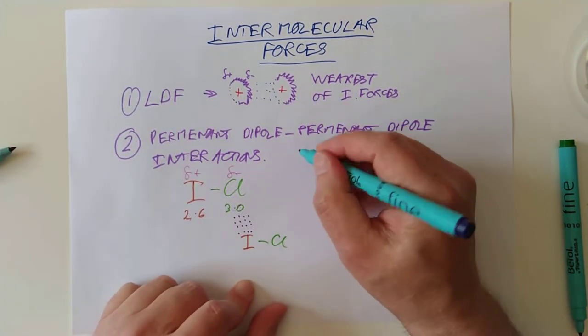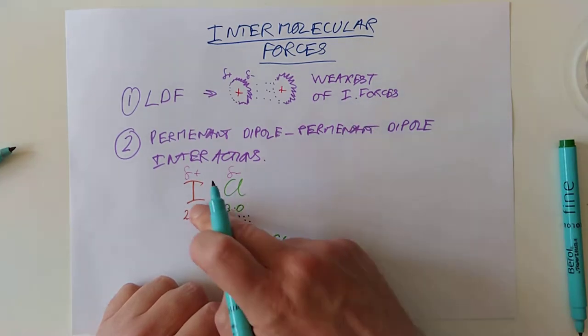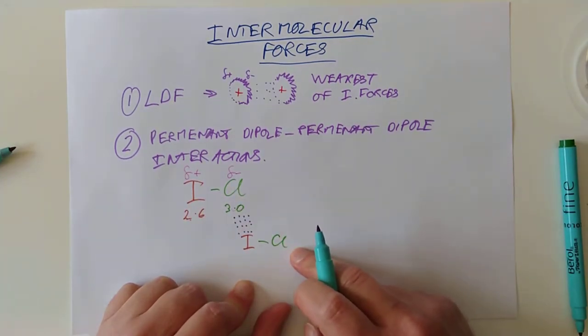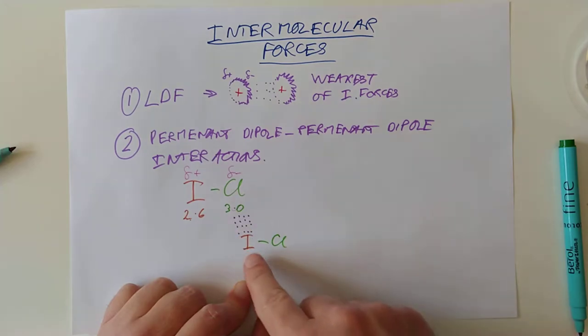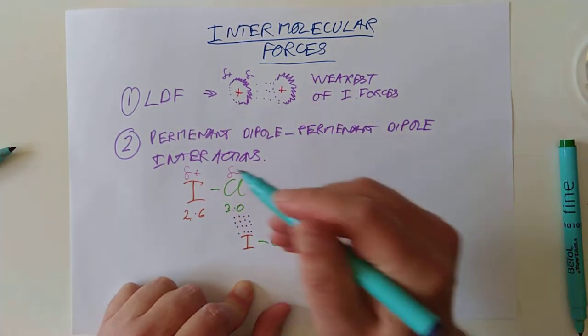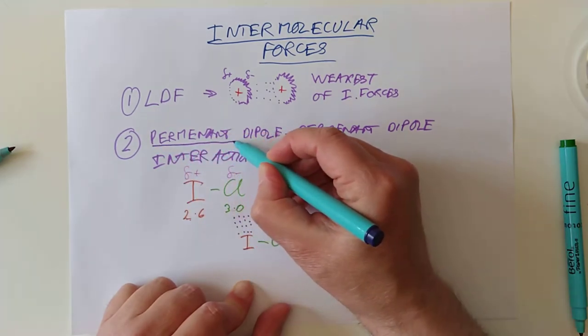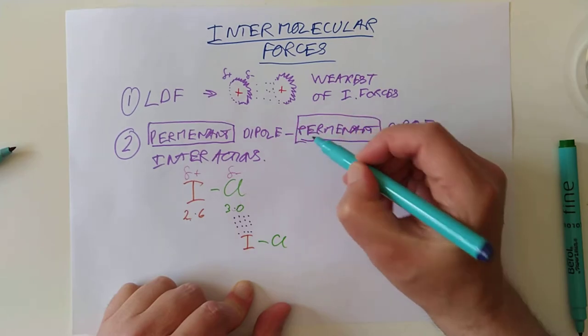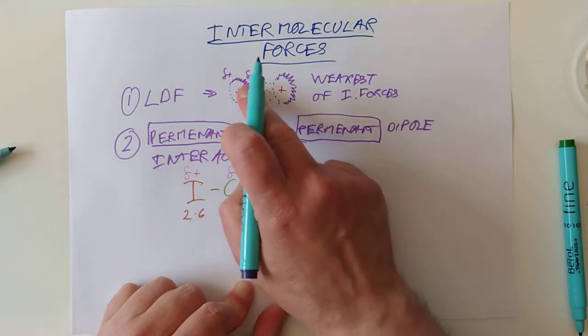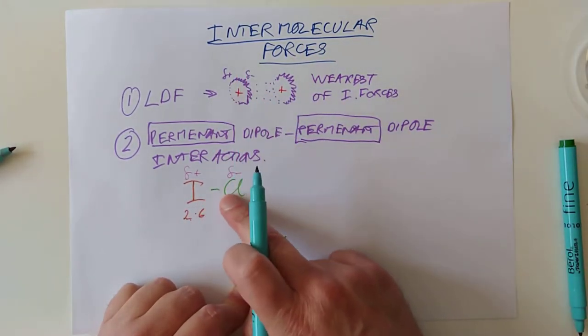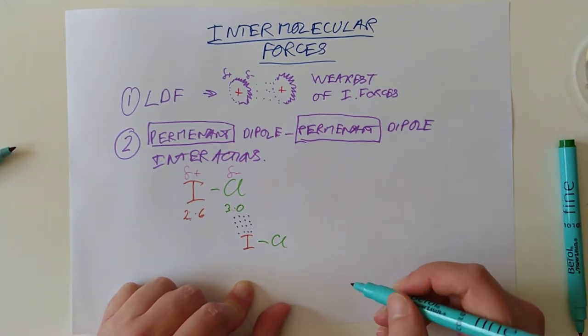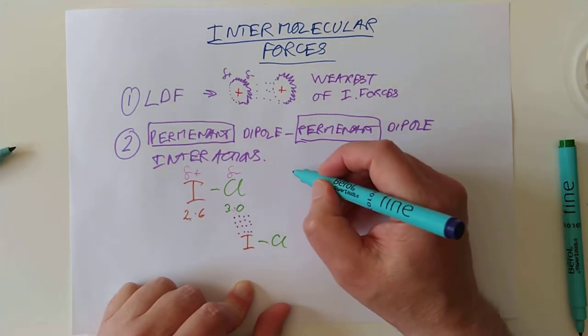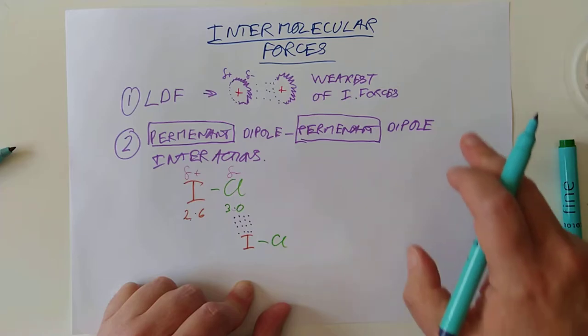So what are they? They are attractions between polar molecules. What causes them? Well, the fact that the molecules are polar. That's the giveaway. The delta minus end attracts the delta plus end. So what's the difference to these guys then? I think that's why the SQA has emphasised the use of the word permanent. Because I just said up here that this polarisation comes and goes. This does not. It's permanent. So these are stronger than London dispersion forces.